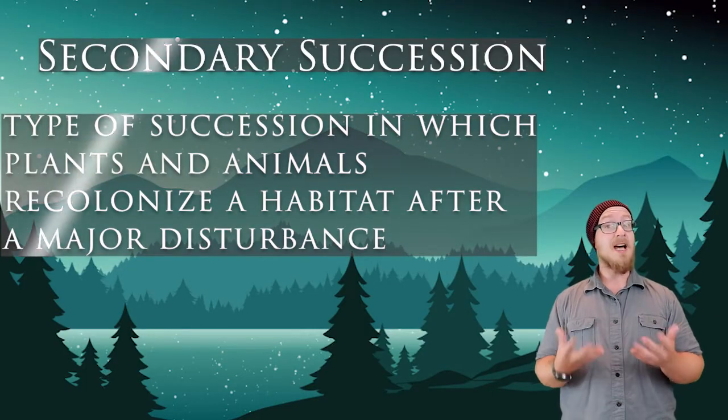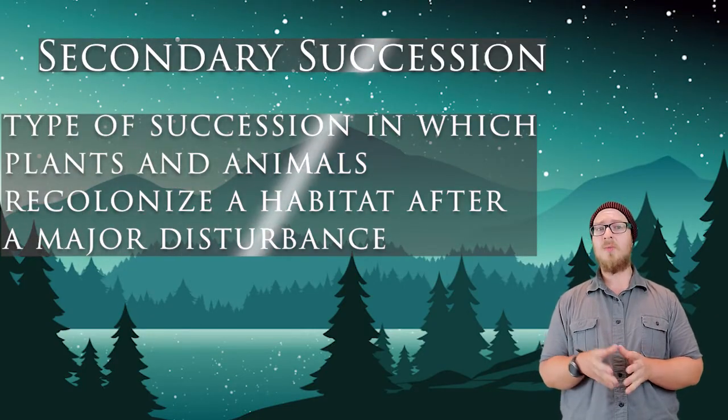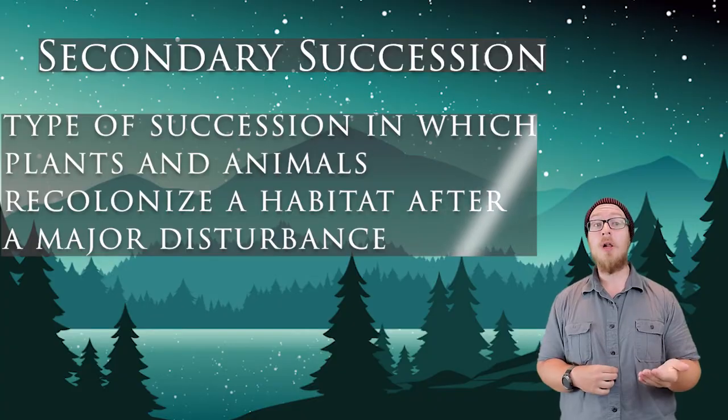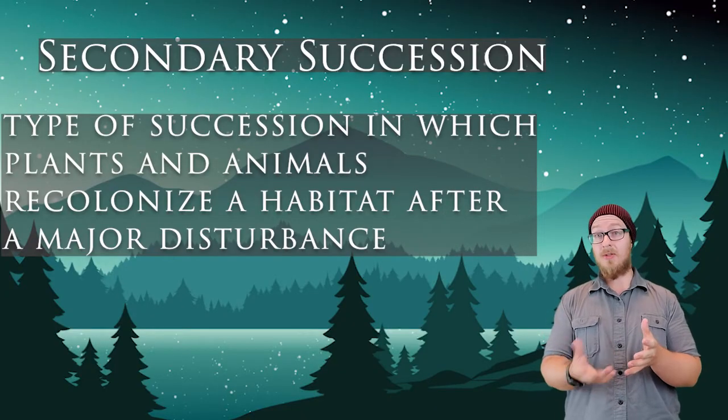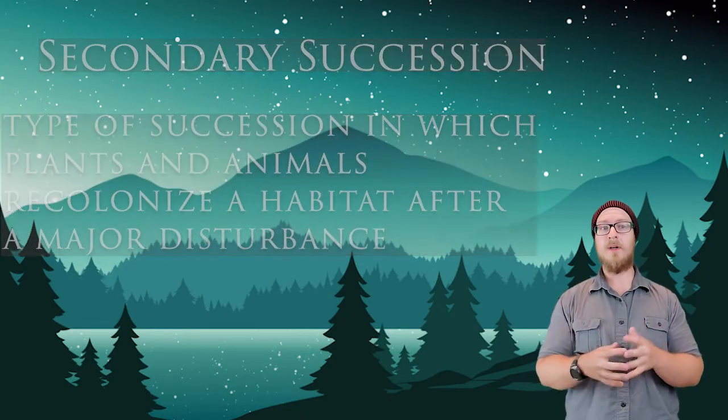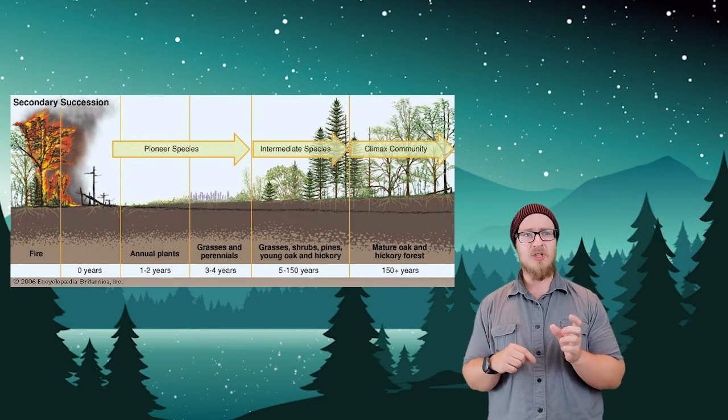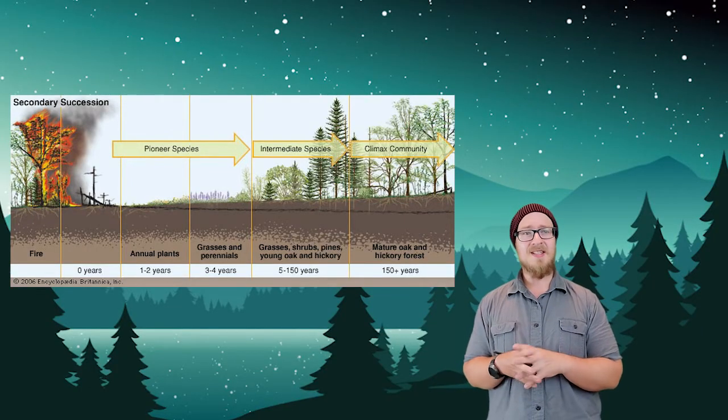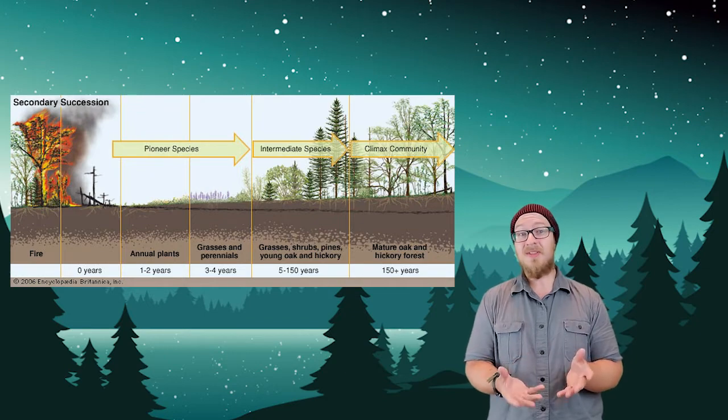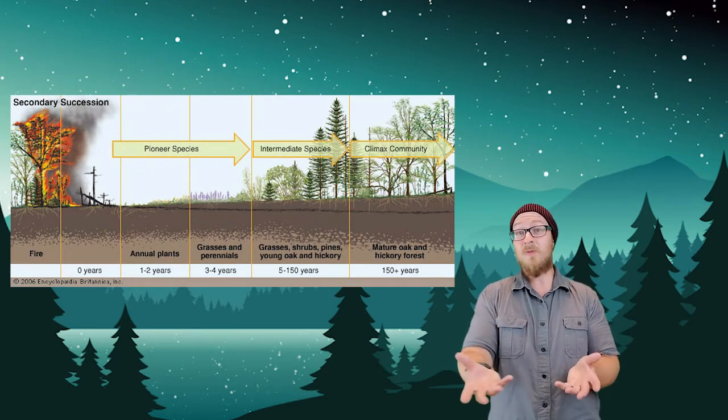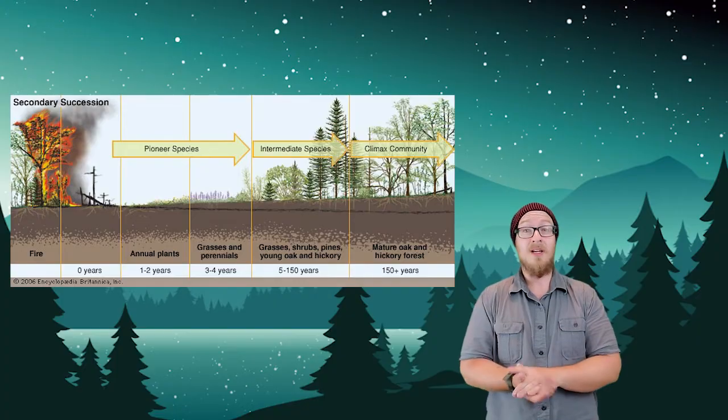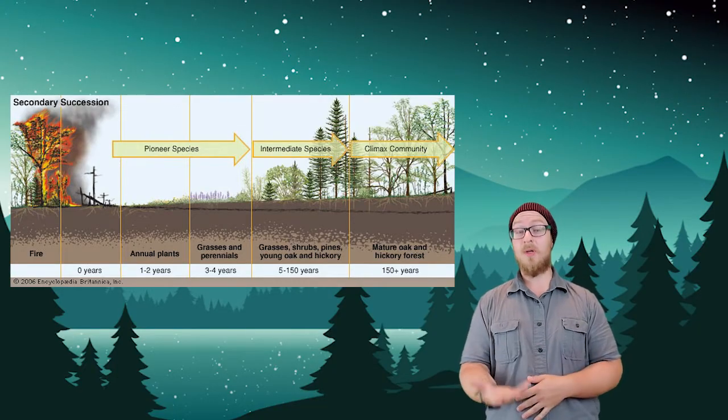Secondary succession is a type of ecological succession in which plants and animals recolonize a habitat after a major disturbance, like a flood or fire. The two biggest differences between primary succession and secondary succession is that secondary succession begins without the need to begin the soil formation process. The soil is already there. So, as a result, it happens much quicker.